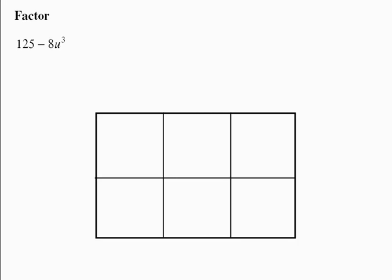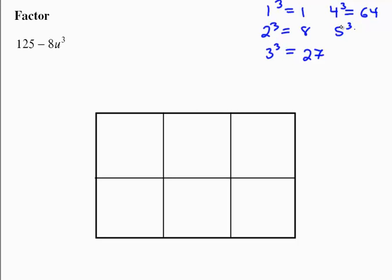The last type of factoring we're going to learn is factoring a difference or sum of perfect cubes. There are some cubes you need to know: 1 cubed is 1, 2 cubed is 8, 3 cubed is 27, 4 cubed is 64, 5 cubed is 125, and 6 cubed is 216. That's how you need to recognize perfect cubes.